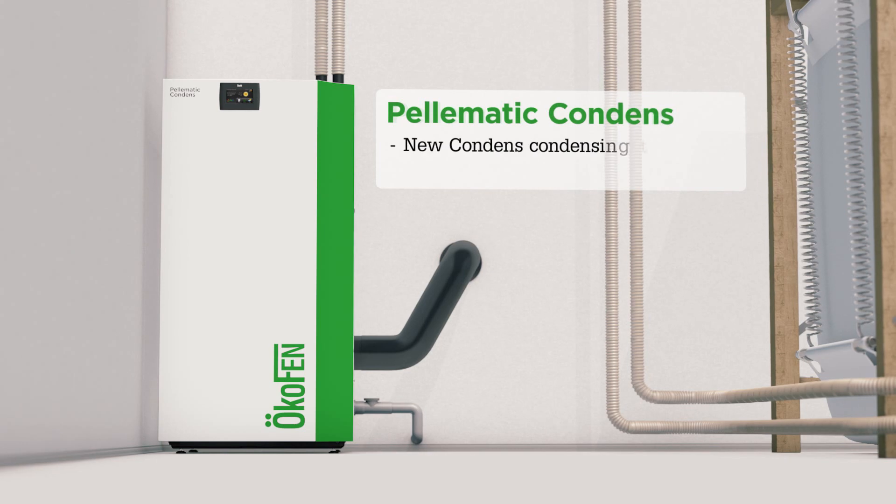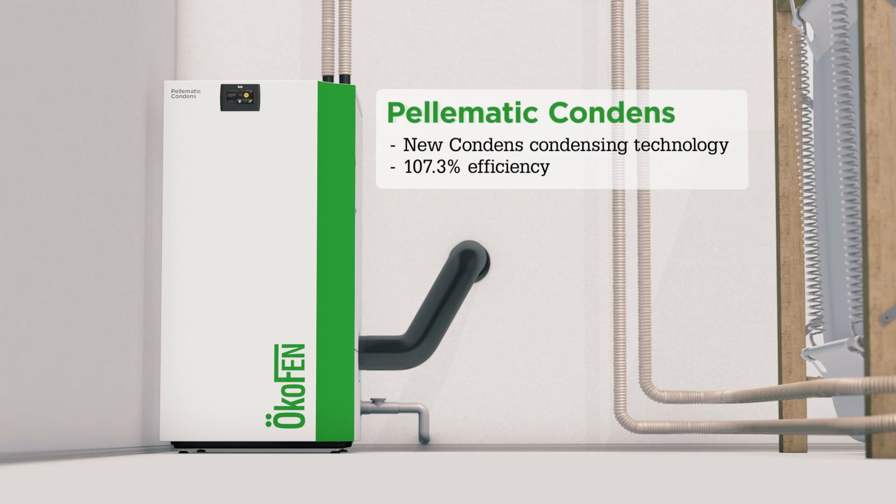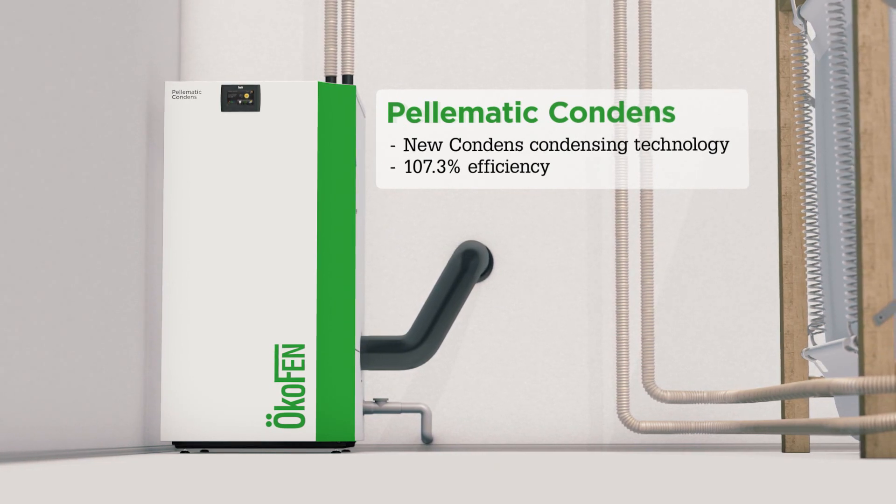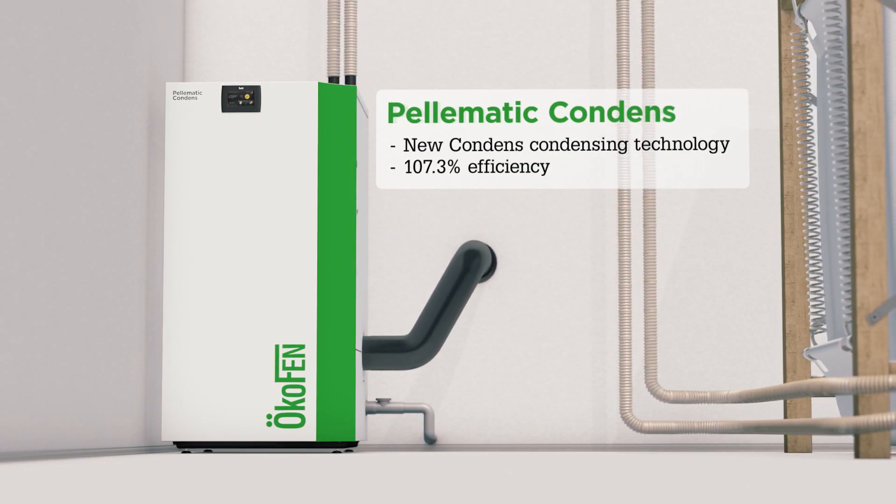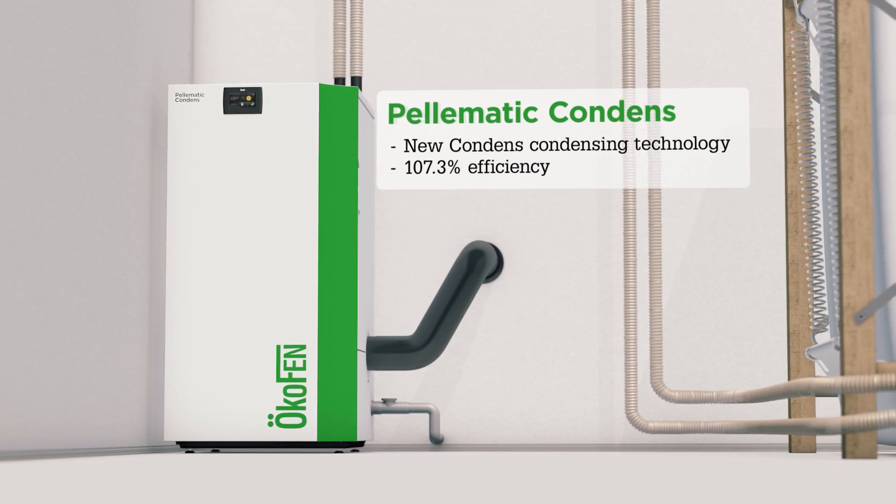The Pelomatic Condense from Ökofen combines efficiency with innovation. Thanks to revolutionary condensing technology, it achieves an efficiency of 107.3 percent, making it the most efficient pellet boiler system in the world.